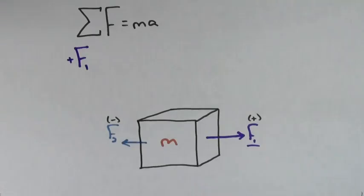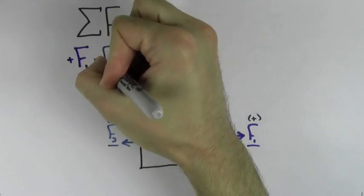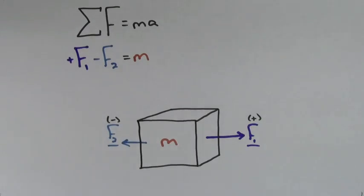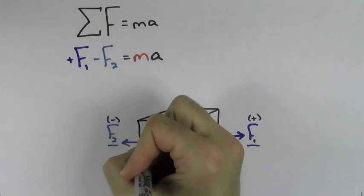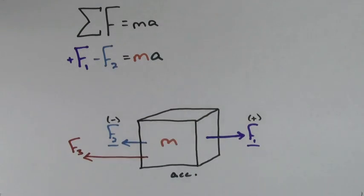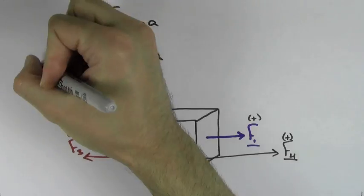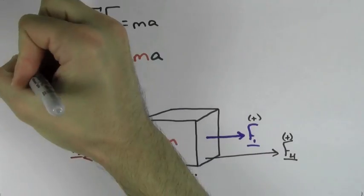Once you've included all the forces on the left-hand side of this equation, you set it equal to MA and solve for whichever is the unknown variable. If there are more forces, you just make sure you include all of them on the left-hand side. F4 points to the right, so we consider it positive, and F3 points to the left, so we consider it negative.